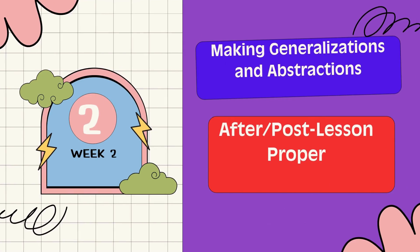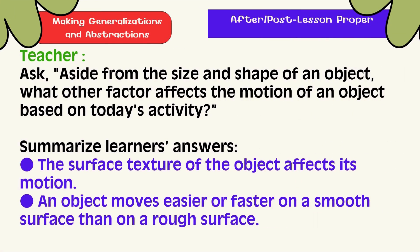Making Generalization: Aside from the size and shape of an object, what other factors affect the motion of an object based on today's activity? The answers are: the surface texture of the object affects its motion. An object moves easier or faster on a smooth surface than on a rough surface.